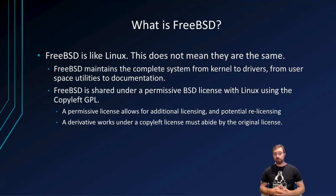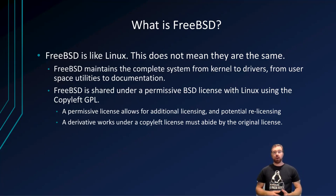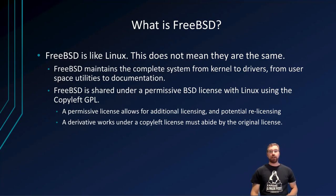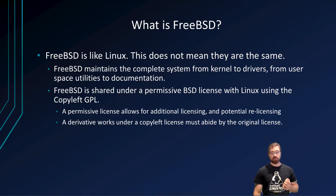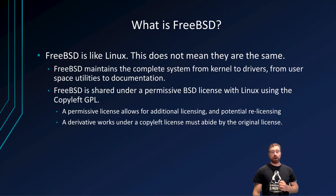A permissive license and a copyleft license both allow individuals to copy, modify, and redistribute work so long as attribution is provided. The primary difference is that FreeBSD's permissive license allows developers to include their own copyright statements in addition to the standard BSD license, while Linux's copyleft license requires the same license on all derivative works without any form of additional licensing.